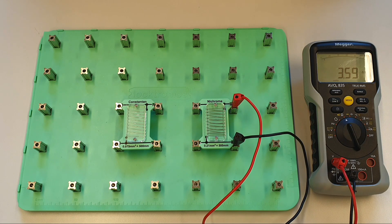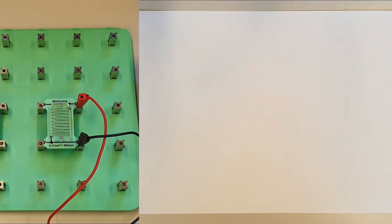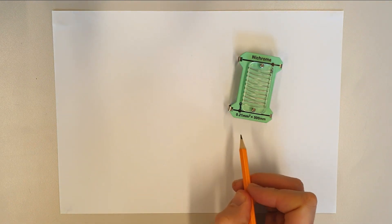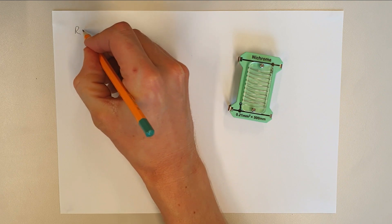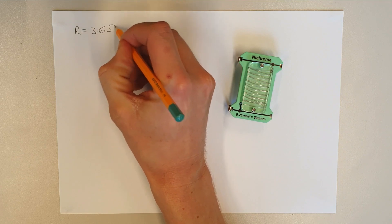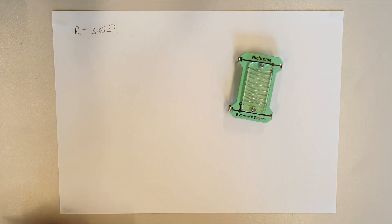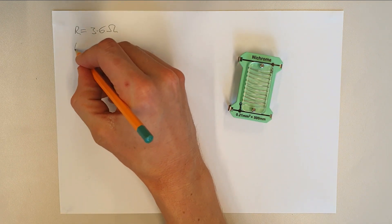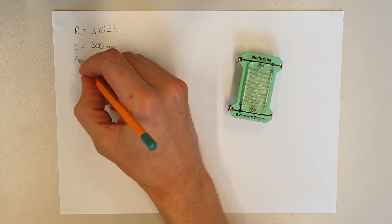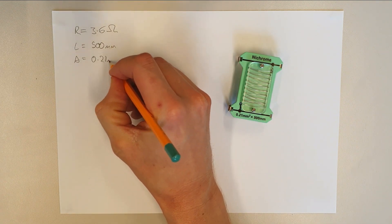Now we can look at a calculation to figure out the resistivity of this material. We measured the resistance of the component as 3.6 ohms. We've got the length of the conductor which is 500 millimeters, and the cross-sectional area of the conductor which is 0.21 millimeters squared. Before we start putting these into our formula, we need to think about these sub-multiples and their prefixes — millimeters and millimeters squared.